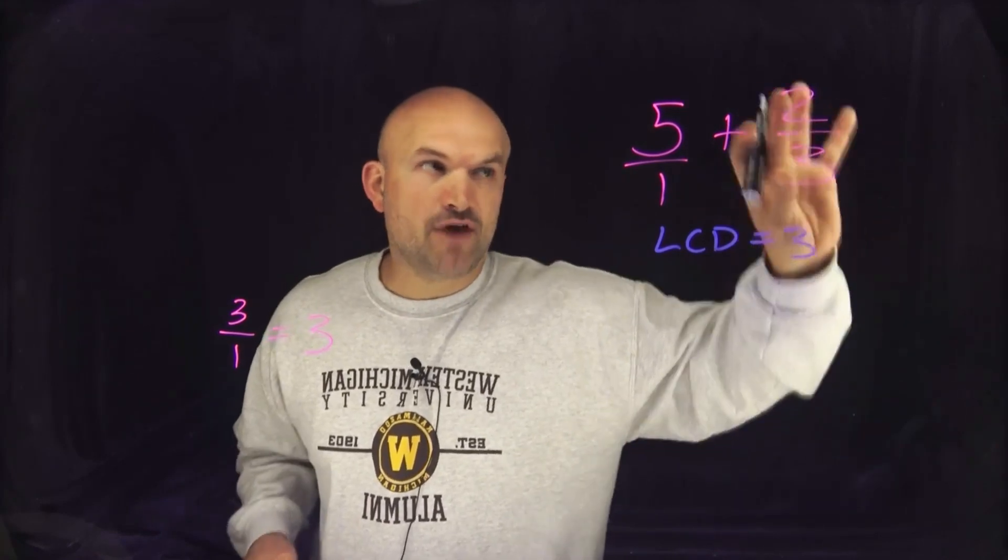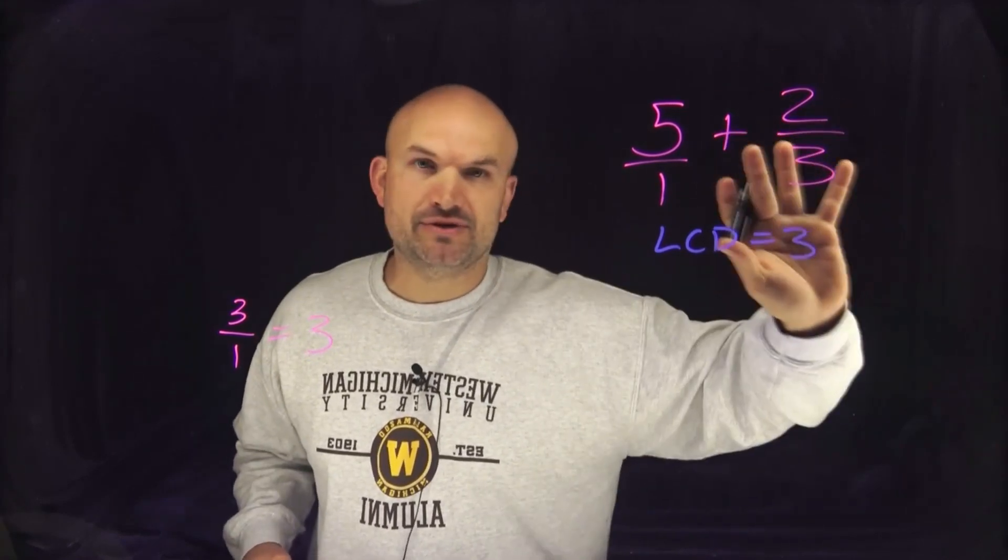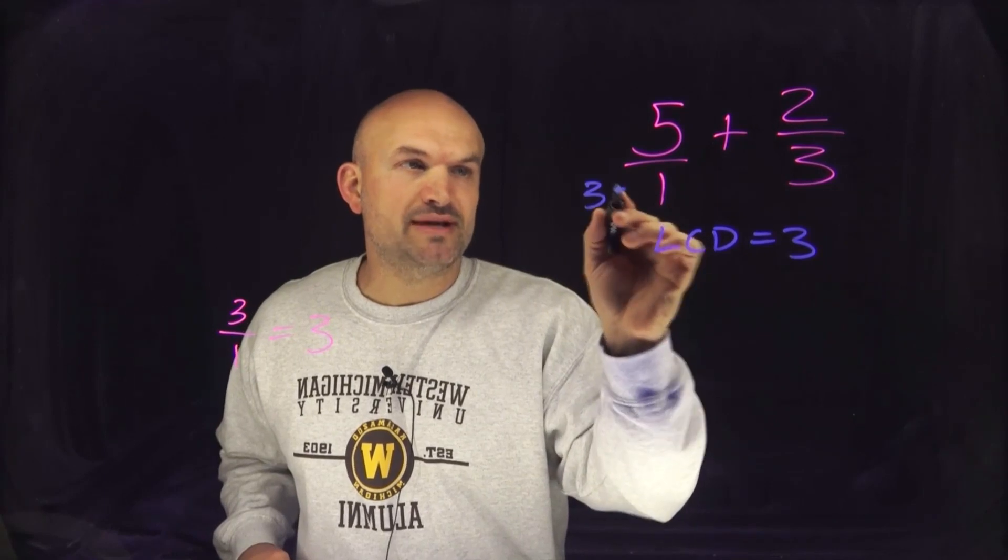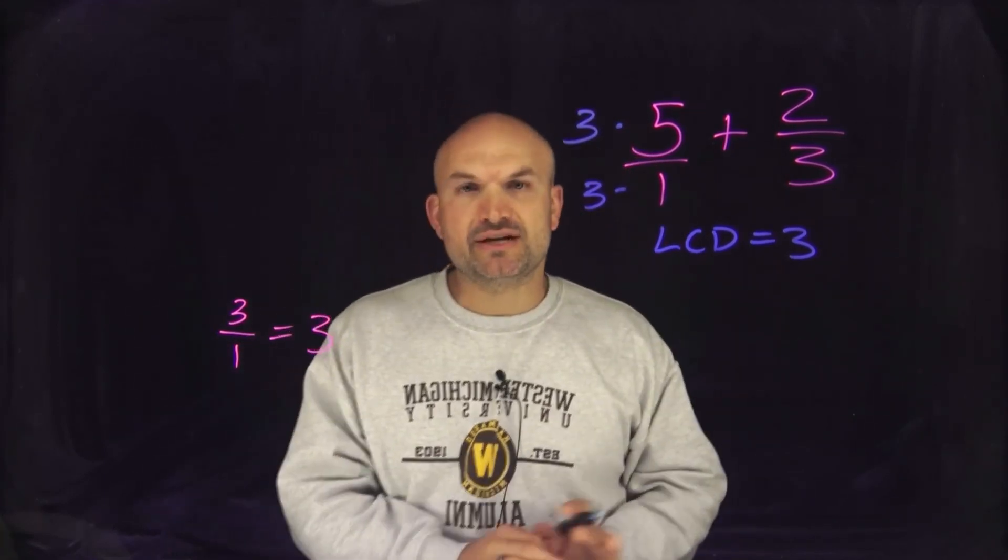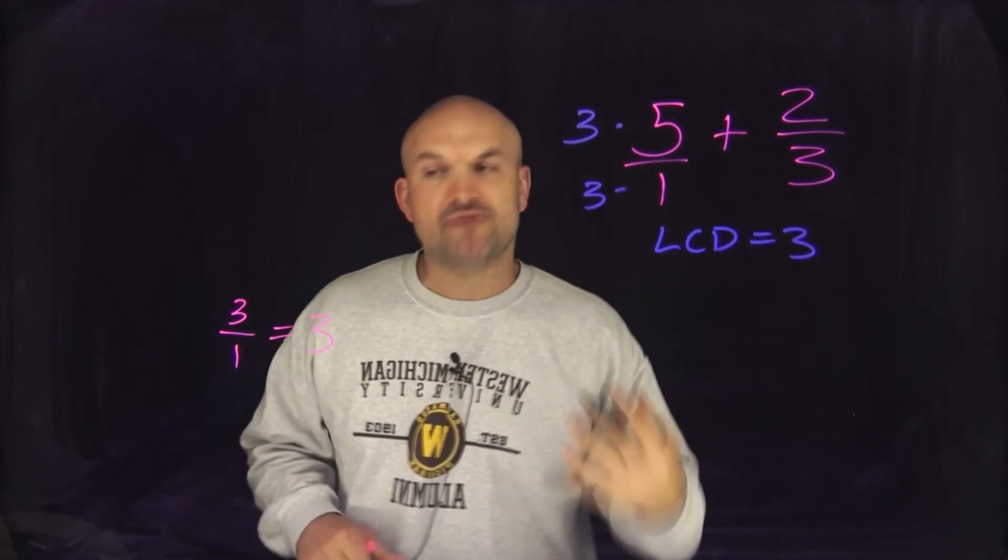Now on this right hand side I've already obtained a 3, so I don't need to do anything. But on this left hand side what I need to do is multiply by 3 on the bottom as well as on the top. And the reason we're doing that is because we're producing what we call equivalent fractions.